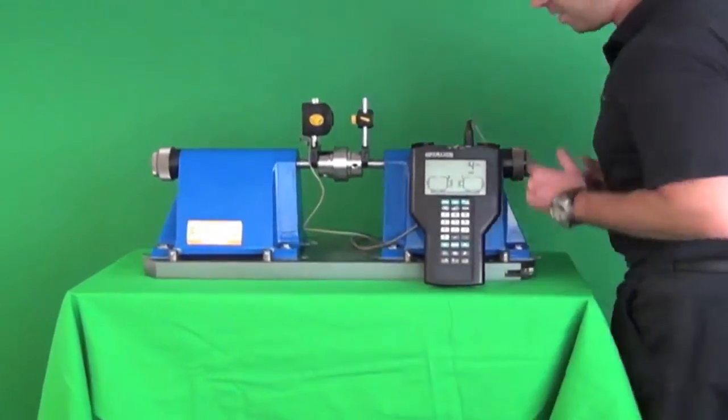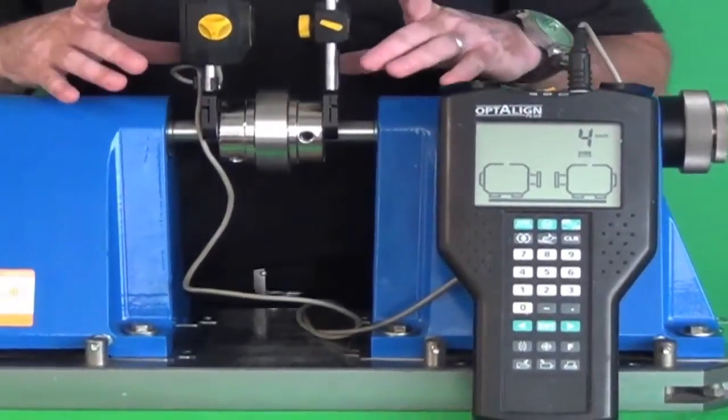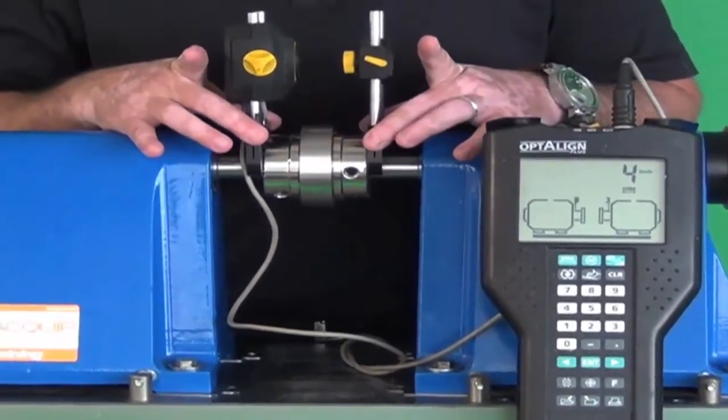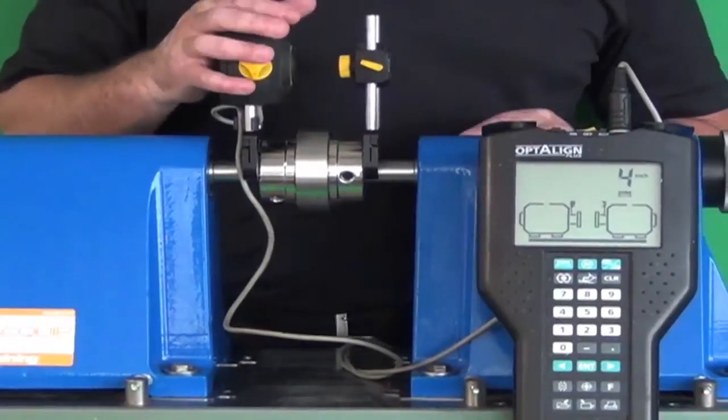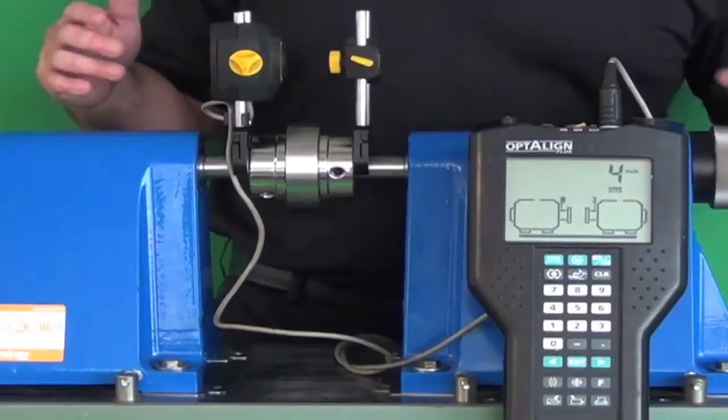The Opti-Line Plus is a very simple tool to use. We have our mag brackets here that are available. We have our laser transducer on one side and the prism on the other. It's a reflected beam technology.